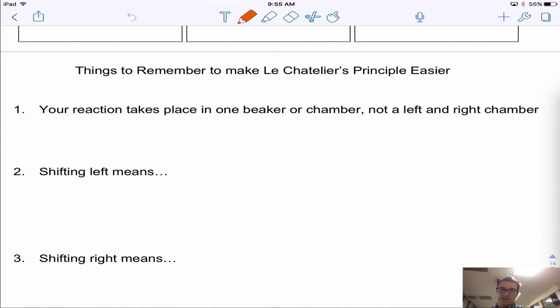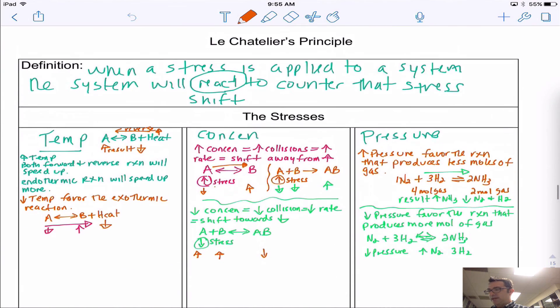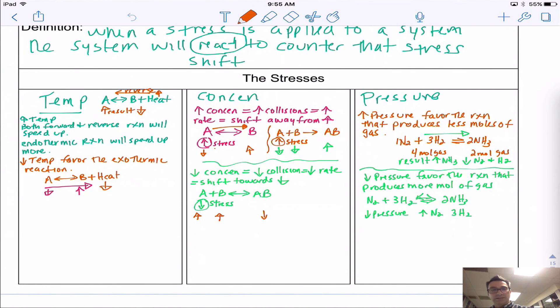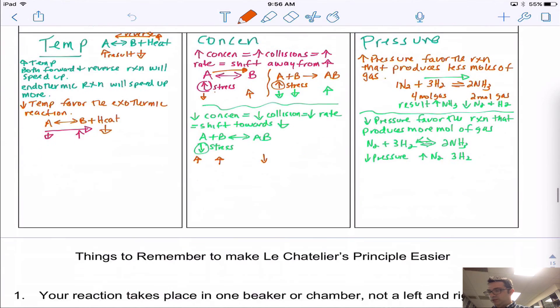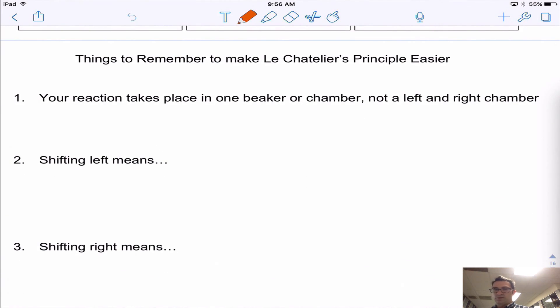Hello everybody. Yesterday we talked about Le Chatelier's principle and I laid out the basics for you in terms of what would happen if we had these different stresses: temperature, concentration, and pressure. I talked to you about what a shift was and what a stress was. I just want to recap that here before we move on to the next part of the notes. What does it mean if you have a shift and what should I be mindful of when I think about Le Chatelier's principle?